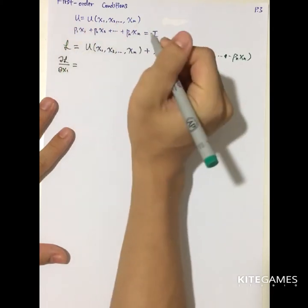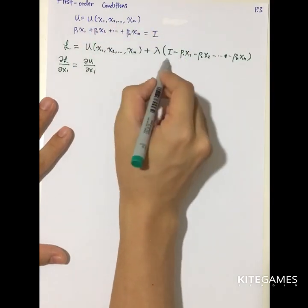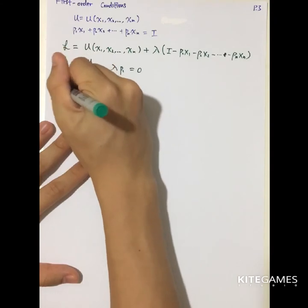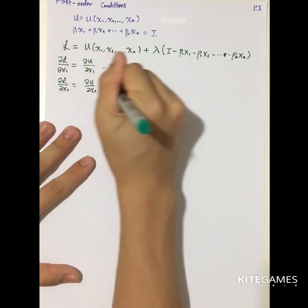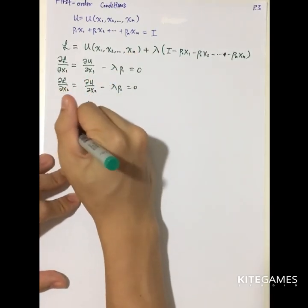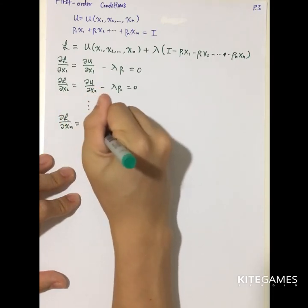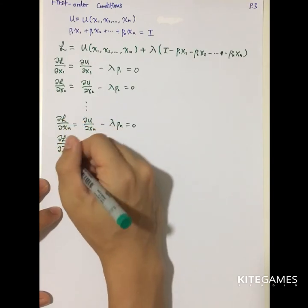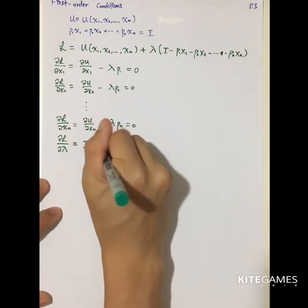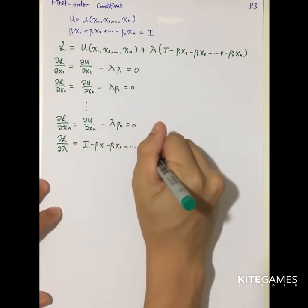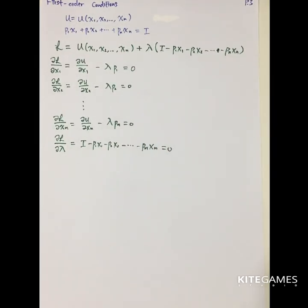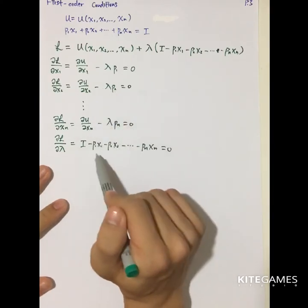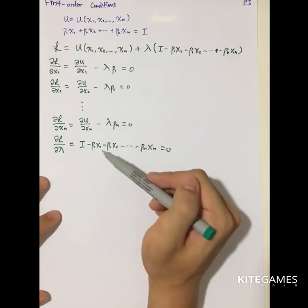The first order condition with respect to Xi gives: ∂U/∂Xi minus lambda·Pi equals zero, and similarly for each good up to Xn. The last condition with respect to lambda gives the budget constraint: I minus P1·X1 minus P2·X2 up to minus Pn·Xn equals zero. We have n+1 variables — X1 through Xn and lambda — and n+1 equations, so theoretically we can find the solutions.